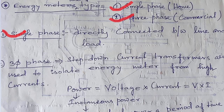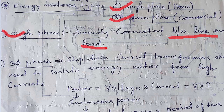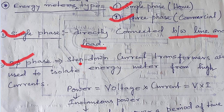Ab single phase energy meter ke baare mein baat karte hai. Single phase energy meter directly connected between the line and the load. Ab three phase kaise connect hota hai? Yehaan pe ek step down transformer use hota hai to isolate the energy meter from the high current.